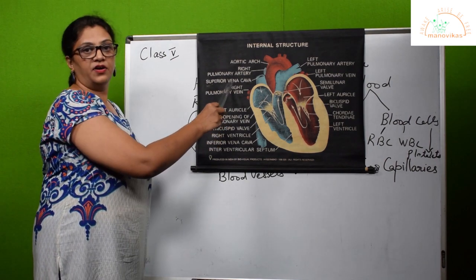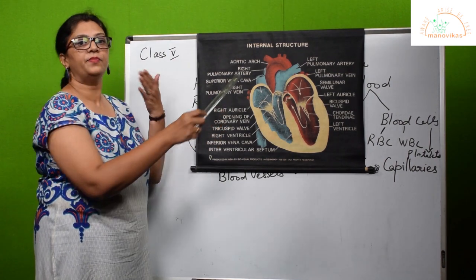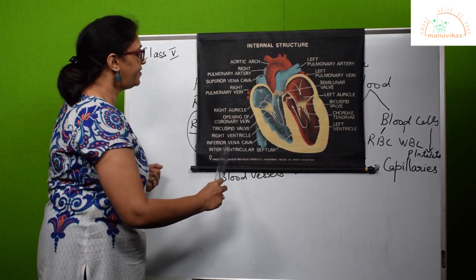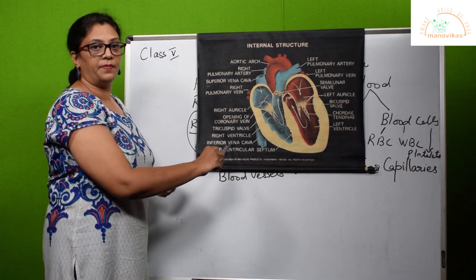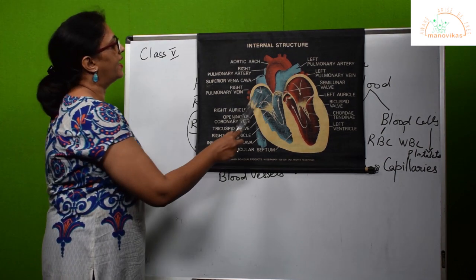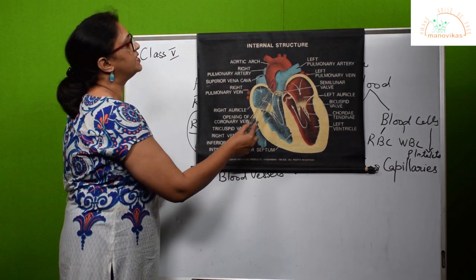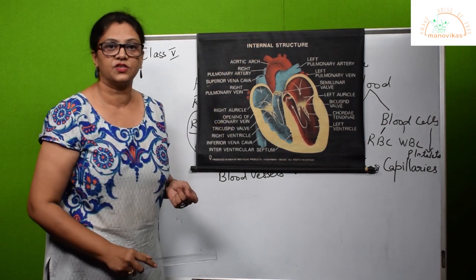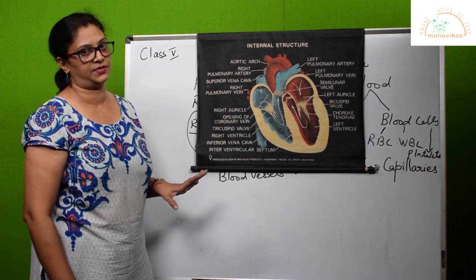The superior vena cava brings the impure blood from the upper part of the body. The inferior vena cava brings the impure blood from the lower part of the body. Then it moves into the pulmonary artery to the lungs for exchange of gases.